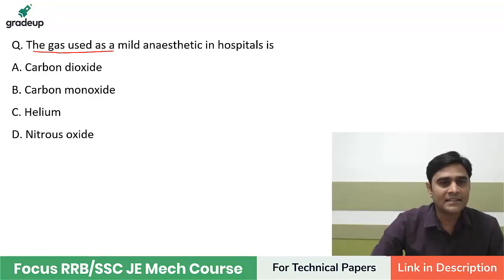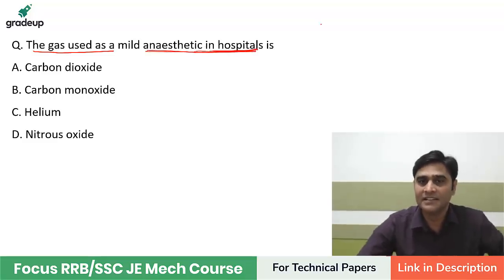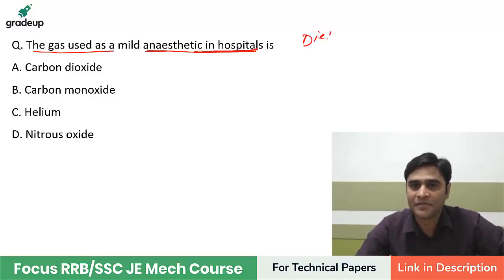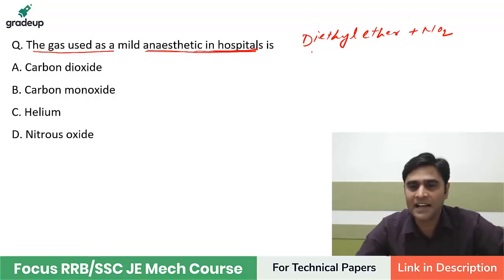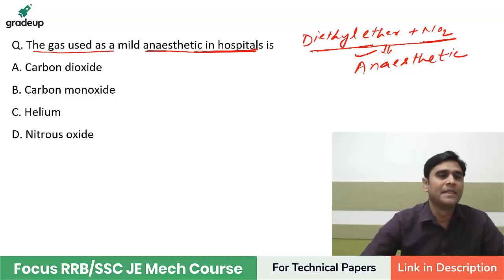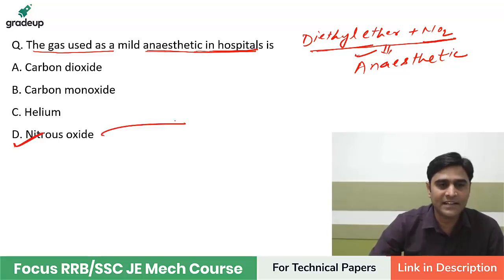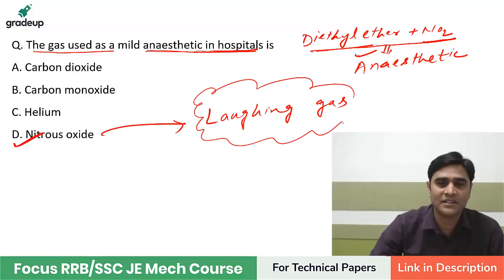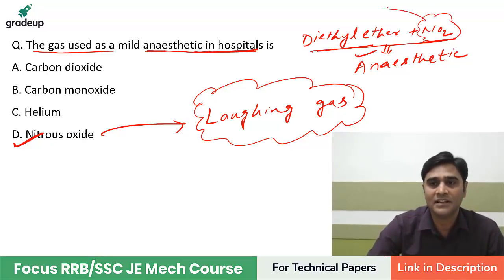A gas used as a mild anesthetic in hospital surgery — the answer is diethyl ether plus nitrous oxide. A mixture of diethyl ether and nitrous oxide is used as anesthetic in medical surgery. Your answer should be nitrous oxide. Nitrous oxide is also called laughing gas, but it is also used as an anesthetic. Nitrous oxide is N2O.